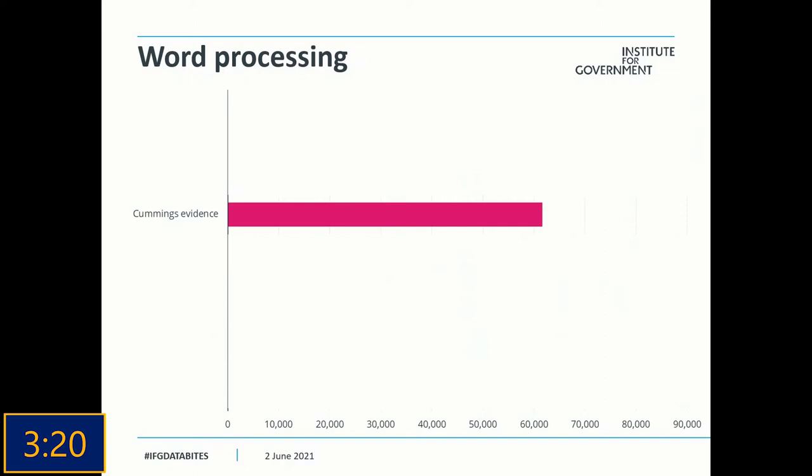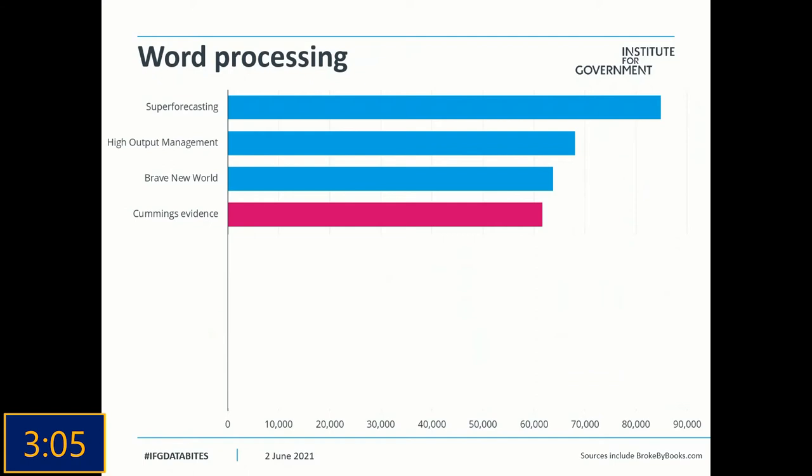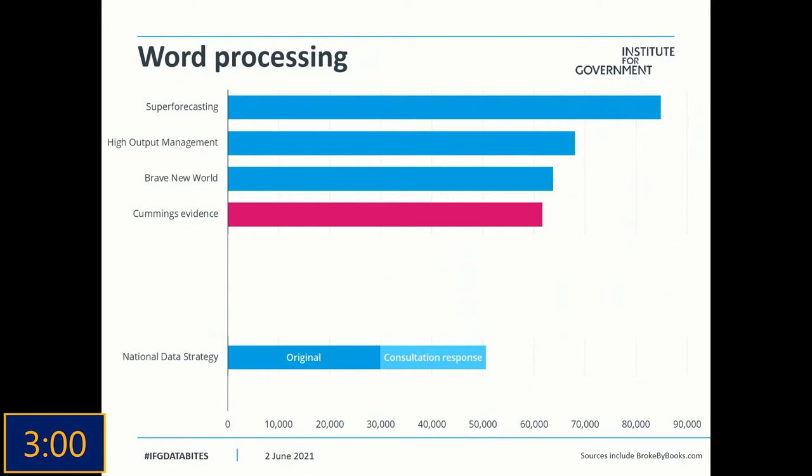The transcript of that select committee appearance runs to 61,656 words. Compared to works of literature, it's not far off Philip Tetlock's Superforecasting and Andy Grove's High Output Management. It's a bit shorter than Brave New World and its dystopian landscape where one man speaks out against the regime. It's longer than the National Data Strategy consultation responses and a few thousand words longer than War of the Worlds and Lord of the Flies.